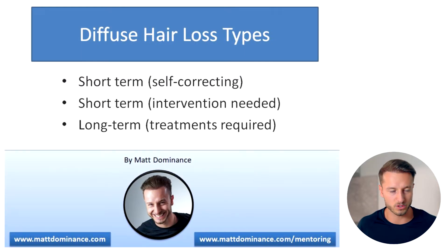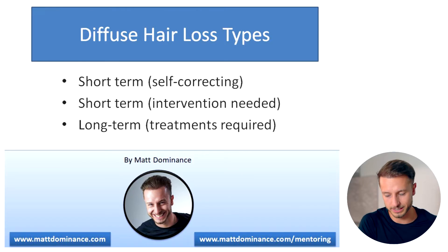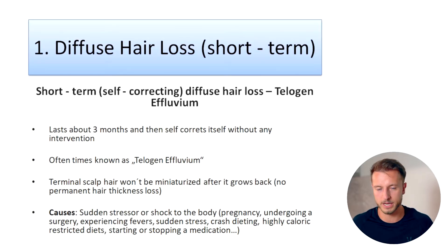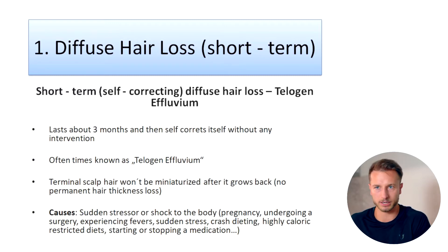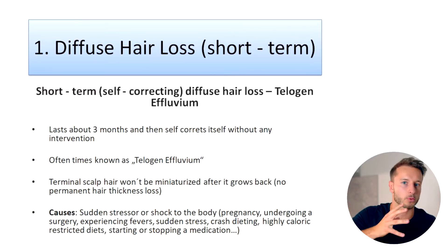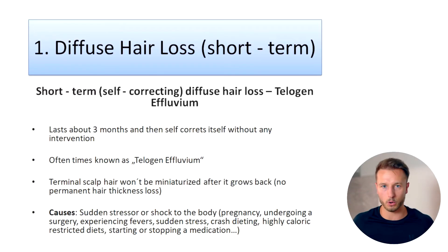Now let's take a closer look at each of these three types of diffuse hair loss and how they differ. The first type is a very short-term type of hair loss which is self-correcting — it doesn't need any intervention or treatments whatsoever. It comes as a result of experiencing a shock, which passes hair follicles prematurely from the anagen growing phase to the telogen resting phase. The resting phase lasts about two to three months, and that's why the hair loss is only going to last for two to three months, not longer.